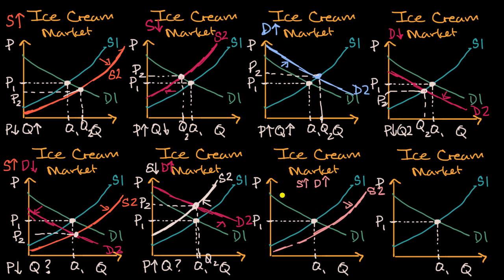And then demand going up. Demand, at a given quantity, people would be willing to pay a higher price. Or at a given price, people would be willing to take on a higher quantity. So demand has gone over here. So we've shifted to the right and up. And our new equilibrium point looks like right over there.